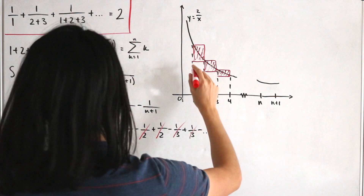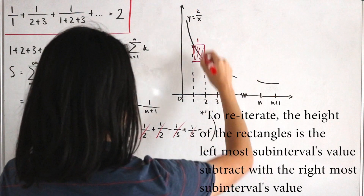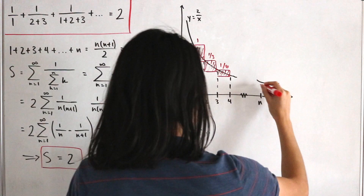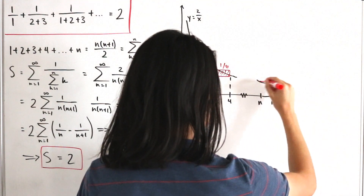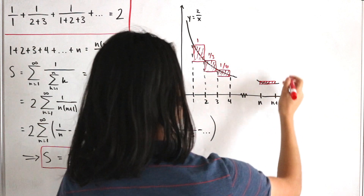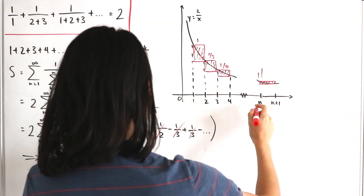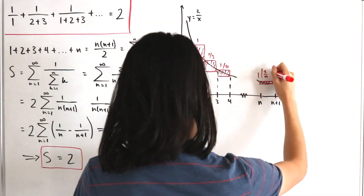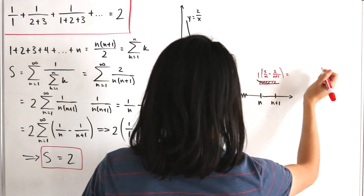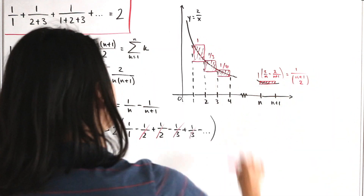Each rectangle has width one and height equal to the function value: so the first is one over one, then one over three, then one over six, and so on — matching the triangular number denominators. Taking the left endpoints and calculating each rectangle as width times height, we get two over n minus two over n plus one, which corresponds to the binomial coefficient of n plus one choose two.